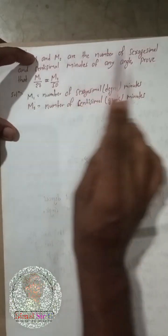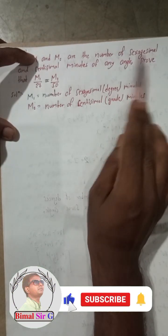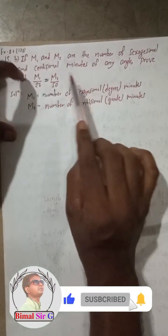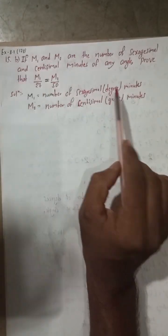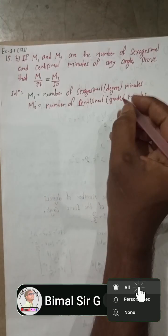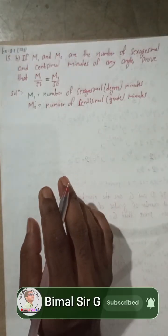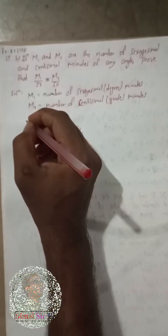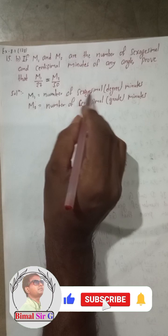So to summarize: m1 is equal to the number of sexagesimal (degree) minutes, and m2 is equal to the number of centesimal (grade) minutes. Now we will solve this. First I will show the longer process.